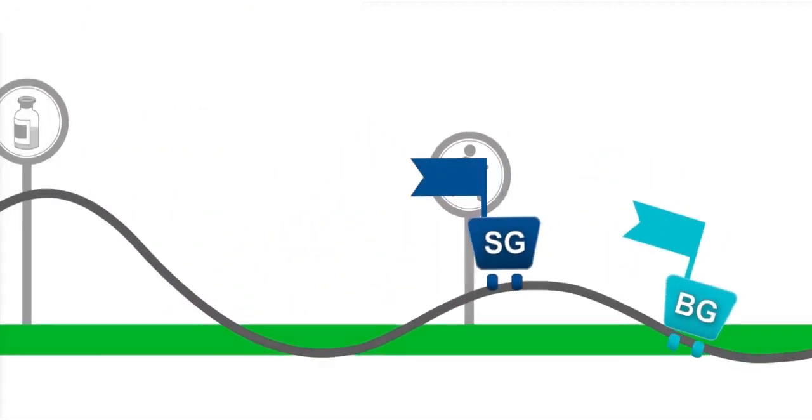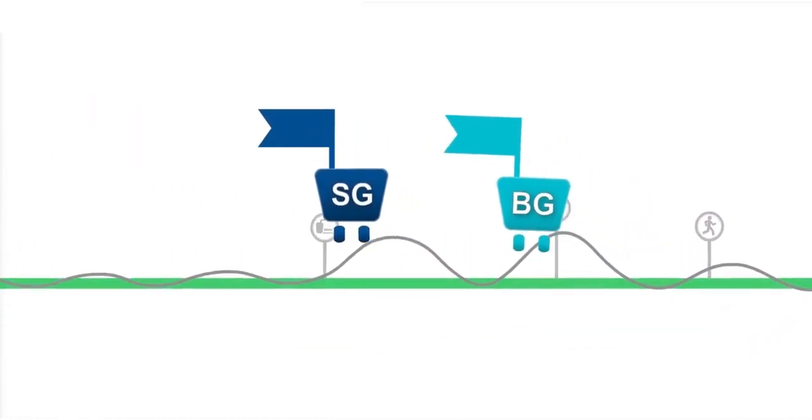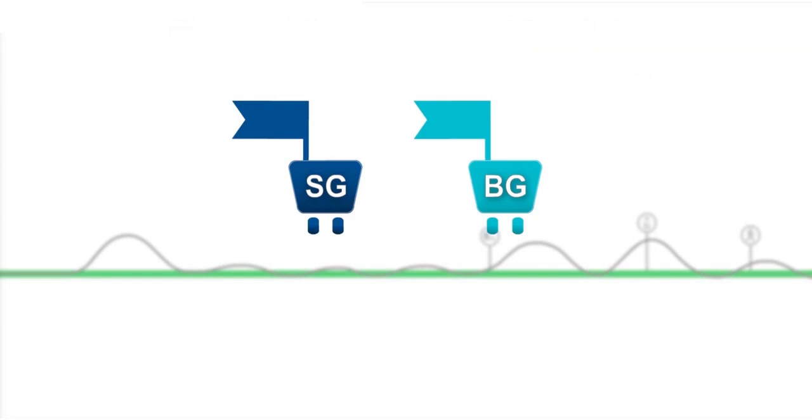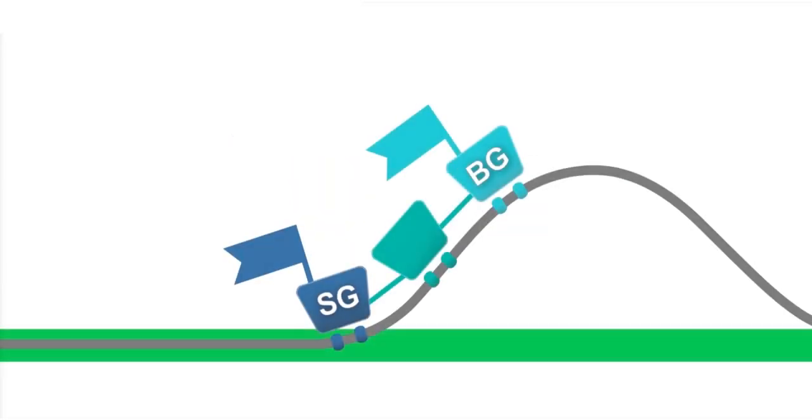There are a few important things to keep in mind. Expect to see a difference in BG and SG. The two numbers will rarely be exactly the same. This is okay. Think about the roller coaster. Especially when glucose is changing rapidly, the BG value will be in the front car ahead of the SG value when going up and down the track.